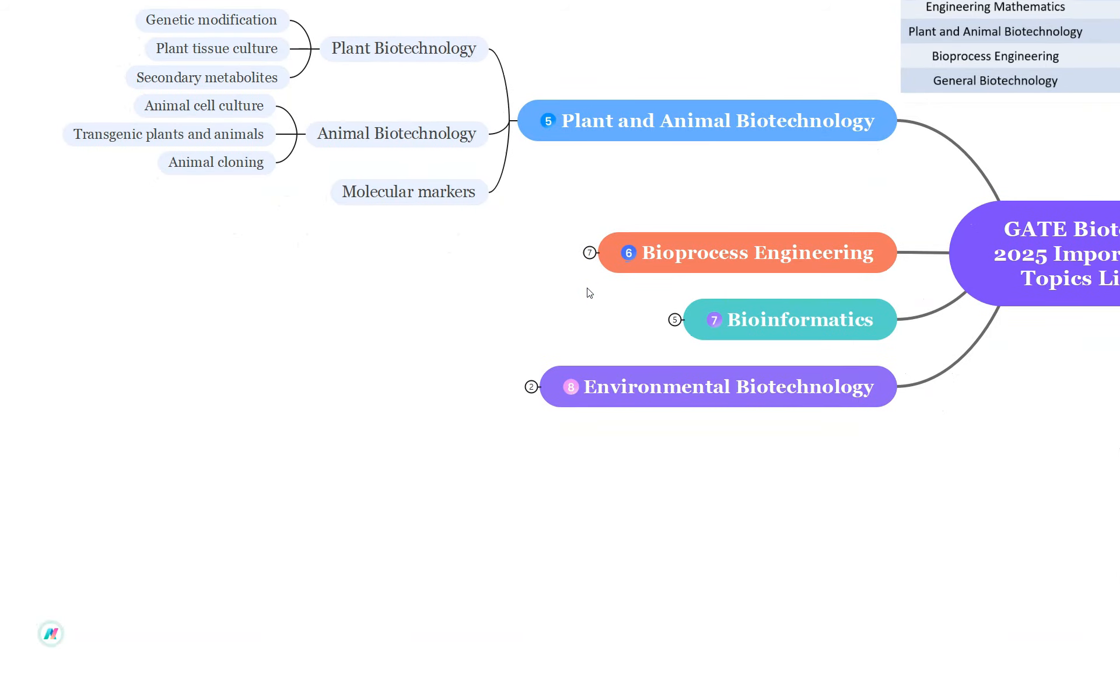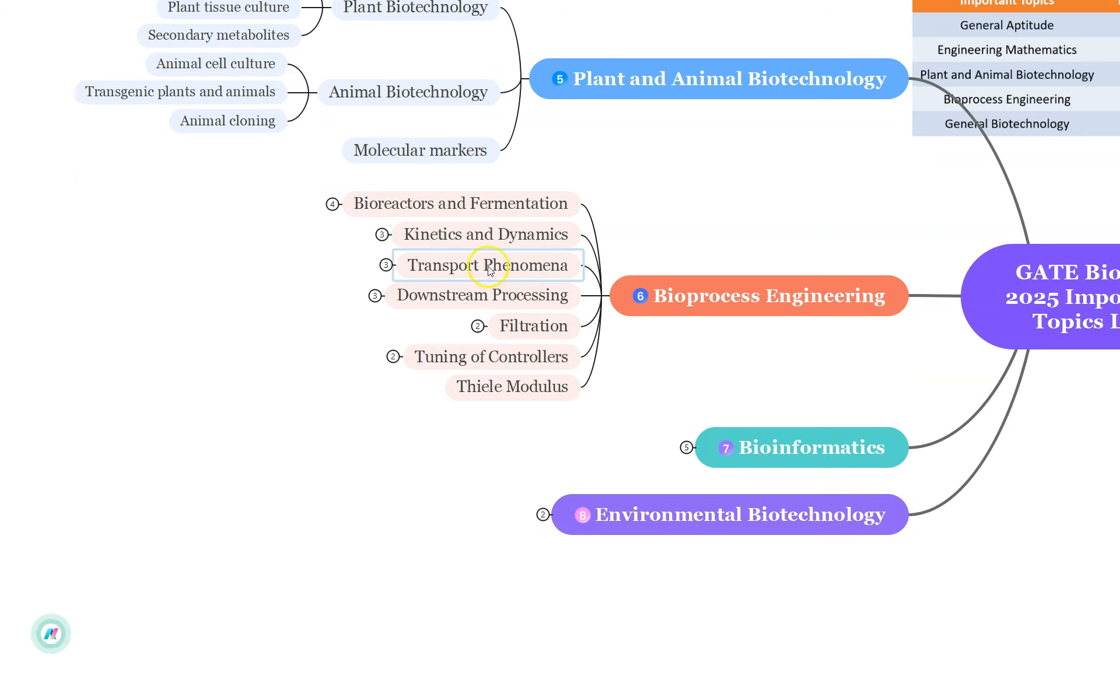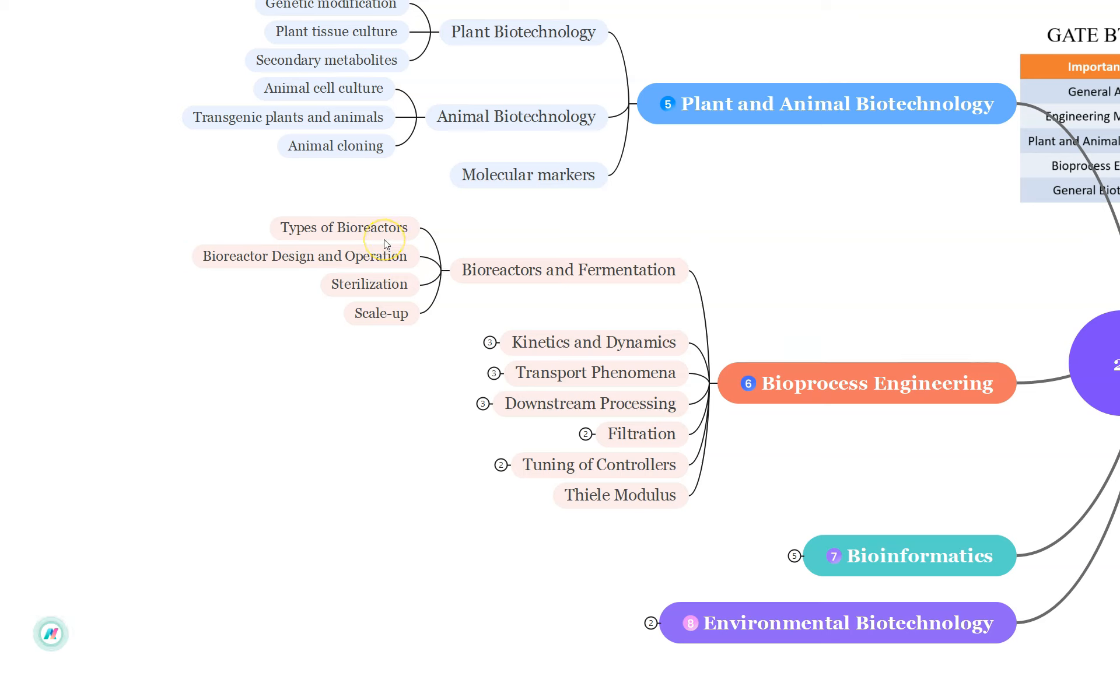Now when preparing for the GATE BT exam, focusing on Bioprocess Engineering and Process Biotechnology section is very crucial. This unit carries significant weightage in the exam and approximately 20 marks are guaranteed from this topic. Generally, students tend to miss out on this but if you want to improve your rank then this is your go-to unit. Let's delve into the important topics within this unit. From bioreactors and fermentation, study about the different types of reactors like stirred tank,